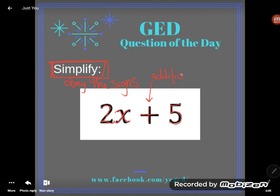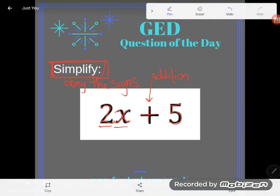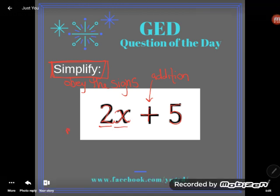The other one might not be so obvious, especially if you're new to algebra. Do you see how this 2 and this x are shoved together like this? When two things are shoved together in math, they are multiplying. So there's the multiplication.